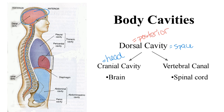If you look at this diagram, you can see how the cranial cavity and vertebral canal are connected right here — there's no barrier between the two. So that's why the whole thing is called the dorsal cavity, and it is split into these two regions.